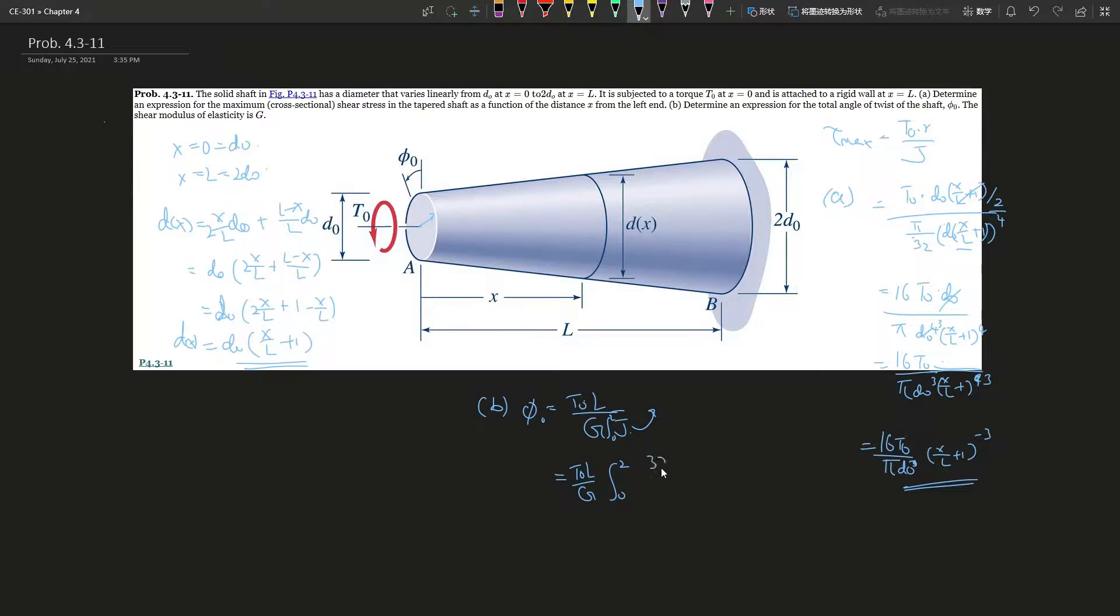So that is 32, right? We already got an expression here. This is the expression of J. So it'll be 32 over pi times d0 to the power of 4, and then x over L plus 1 to the power of 4. Okay, and we're integrating dx. So there are some constants as well, so we can say 32 T0 L over g pi times d0 to the power of 4. All of these we don't really need them, right? So from 0 to L, and then 1 over x over L plus 1 to the power of negative 4.